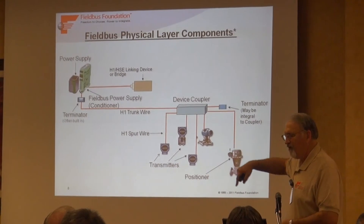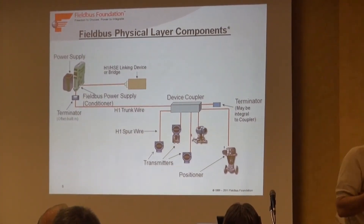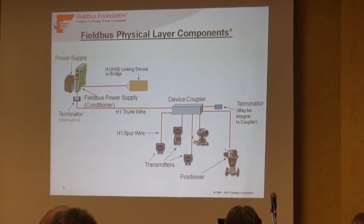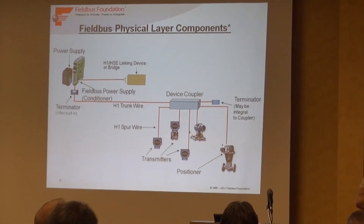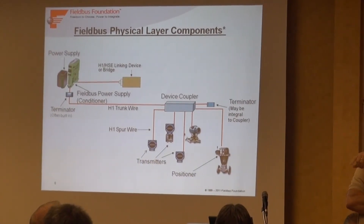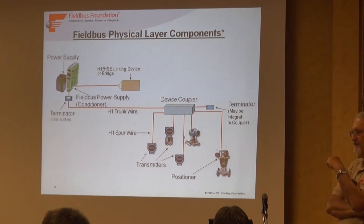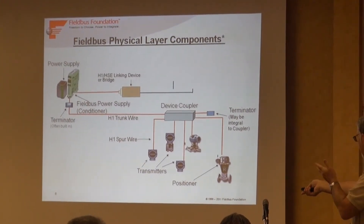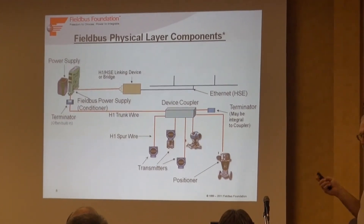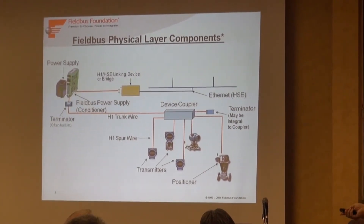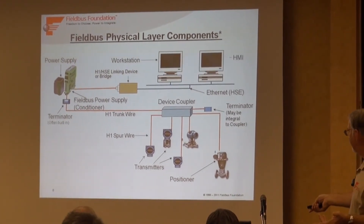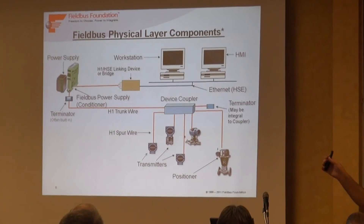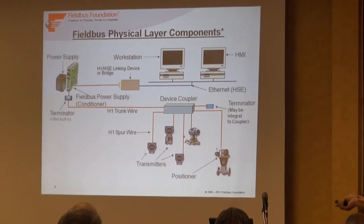To be able to talk to a host system or actually see something on the screen, you're going to have to have some sort of bridge, linking device, or H1 interface. That's usually where the LAS - the Link Active Scheduler, this traffic cop - resides. That's the one that sets up the schedule and keeps track of who's on that segment, which one's talking at the proper time, and that sort of thing. Add this linking device and now you may have high-speed Ethernet or H1 interfaces going to your workstations and HMIs. It's basically as simple as that: one pair of wires, many instruments. We'll talk about how many is many.